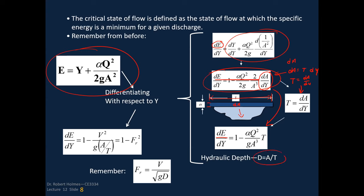Remember that the hydraulic depth is area over top width, so A over T is the hydraulic depth. The Froude number is defined as velocity over the square root of G times D, where D is the hydraulic depth. Therefore the Froude number squared equals V squared over GD, which means this expression for dE/dy is nothing more than 1 minus the Froude number squared.